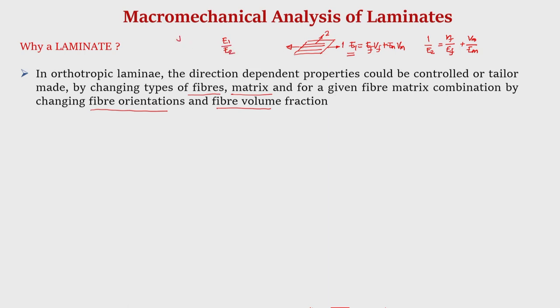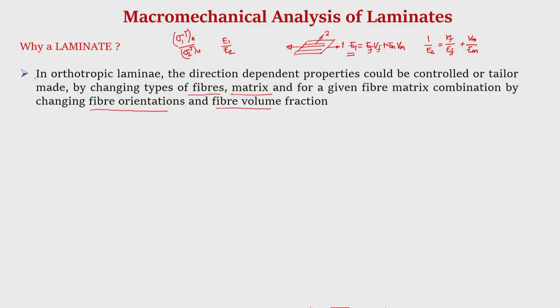Similarly, we can decide the ratio of longitudinal tensile strength to transverse tensile strength. These are all dependent on fiber properties, matrix properties, and relative volume fraction. Therefore, one of the major advantages of composites is that we can tailor the strength and stiffness to meet specific design requirements — an important lesson from micro and macro mechanics of lamina.